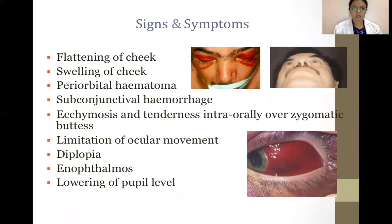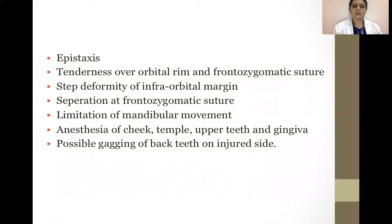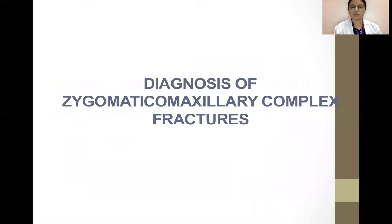Signs and symptoms of zygomatic complex fractures include: flattening of the cheeks, swelling of cheeks, periorbital hematoma, subconjunctival hemorrhage, ecchymosis and tenderness intra-orally over the zygomatic buttress, limitation of ocular movement, diplopia, enophthalmus, lowering of the pupil level, epistaxis, tenderness over the orbital rim and frontozygomatic sutures, step deformity of the infraorbital margin, separation at the frontozygomatic suture, limitation of mandibular movement, anesthesia of the cheek, temple, upper teeth and gingiva, and possible gagging of back teeth on the injured side.